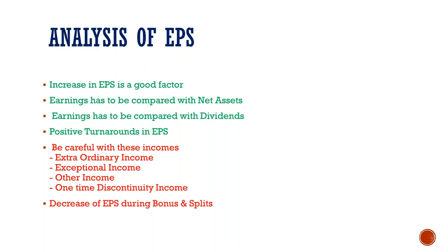EPS is not an ultimate factor. We compare it with different things. For EPS, when the positive turnaround is due to extraordinary income — like exceptional income, other income, or one-time discontinuity income — that positive turnaround is not a good sign. If the income comes from selling assets rather than business operations, it may not repeat next year, except for exceptional items.